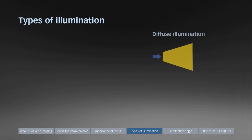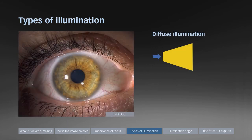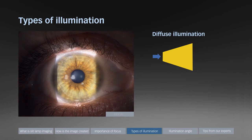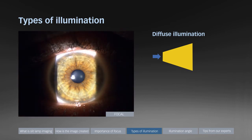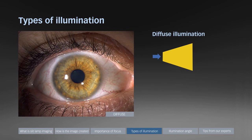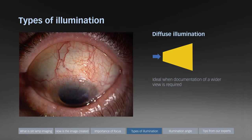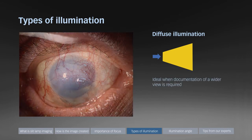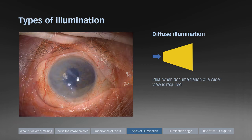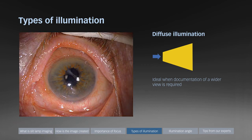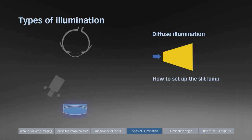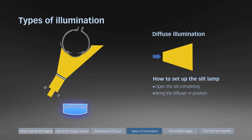Diffuse illumination provides even light distribution. For comparison, the same eye with direct focal illumination, and here the diffuse illuminated version again. Diffuse illumination is ideal when documentation of a wider view is required. To set up the slit lamp for diffuse illumination, open the slit completely, bring the diffuser into position, and use a small amount of background illumination.